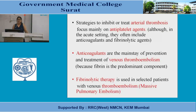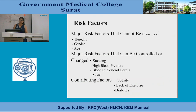The strategies to inhibit or treat arterial thrombosis focus mainly on antiplatelet agents, although in acute settings they often include anticoagulants and fibrinolytic agents as well. Anticoagulants are the mainstay of prevention and treatment of venous thromboembolism because fibrin is the predominant component. Fibrinolytic therapy is used in selected patients, such as those with massive pulmonary embolism. Risk factors include non-modifiable ones like heredity, gender, and age, and modifiable ones like smoking, high blood pressure, high cholesterol, stress, obesity, lack of exercise, and diabetes.